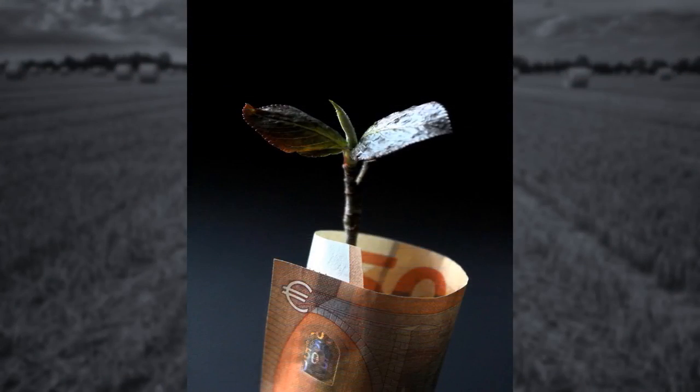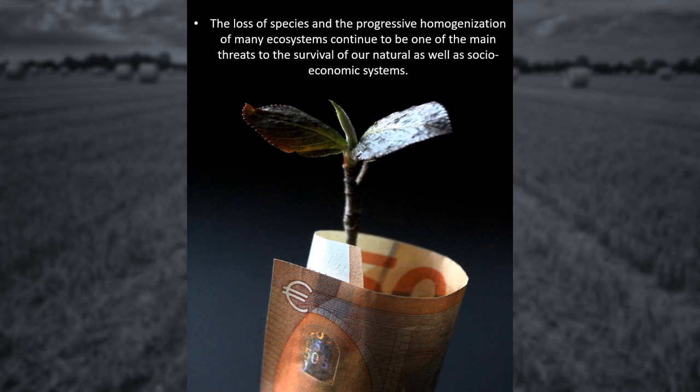When we talk about managing agrobiodiversity for sustainable use, we can look into the Millennium Ecosystem Assessment Report, which concluded that human activities have led to more rapid loss of biodiversity on Earth over the last 50 years than ever before in human history, especially from the 1960s onward. The report argued that the loss of species and progressive homogenization of many ecosystems continue to be one of the main threats to natural as well as socio-economic systems.